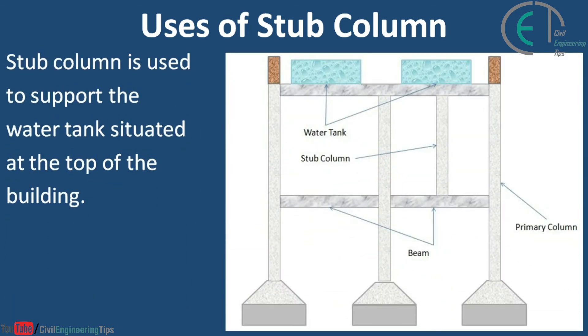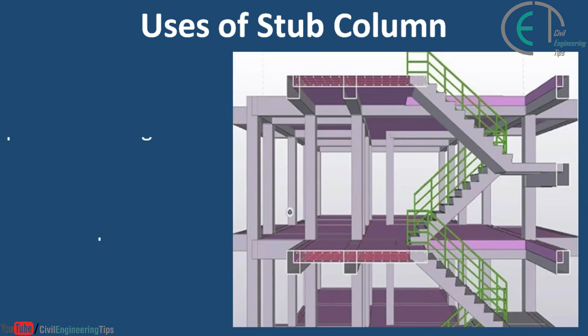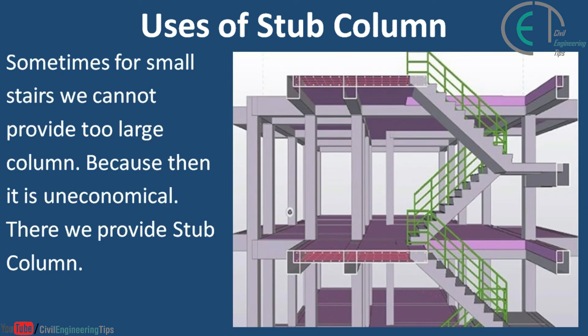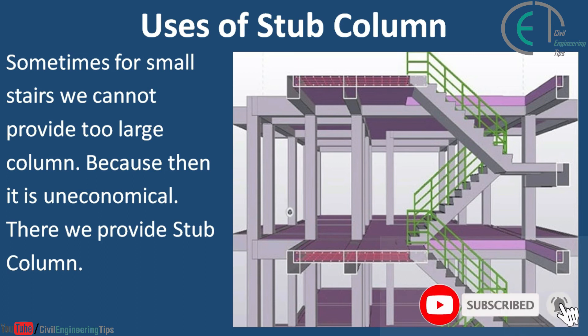Stub column is used to support the outer tank situated at the top of the building. Sometimes, for a small staircase, we cannot provide a large column because it would be uneconomical — in such cases, a stub column is provided.